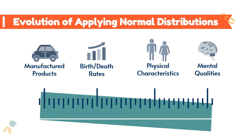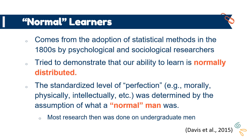We do see some things that follow this pattern, although some mathematicians have argued that linear distribution isn't found in most phenomena in the population. We initially applied this idea to manufactured products, assuming that objects produced in a factory will deviate from the desired standard in a predictable way. Then we applied this to birth rates, death rates, and physical characteristics like height — so a difference in height was no longer just seen as natural diversity, but rather as error or deviation from what is quote-unquote normal.